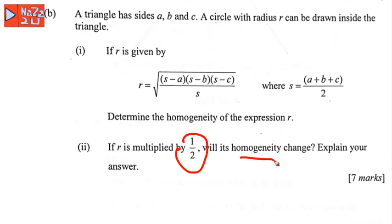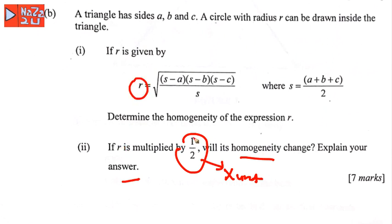Question number two: if r is multiplied by one-half, does the homogeneity change? One-half is a dimensionless constant — it has no unit, so its dimension is equal to 1. Therefore, multiplying the radius r by the value one-half does not change the homogeneity, because dimensionless constants do not affect dimensional analysis.